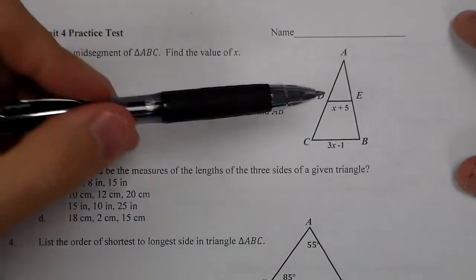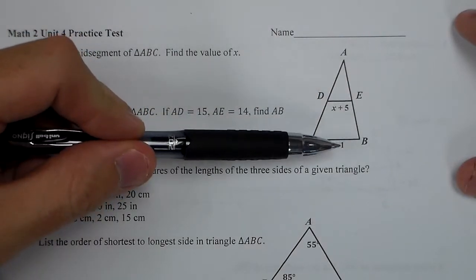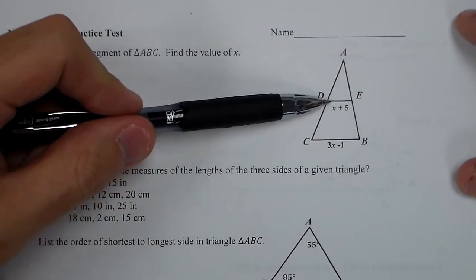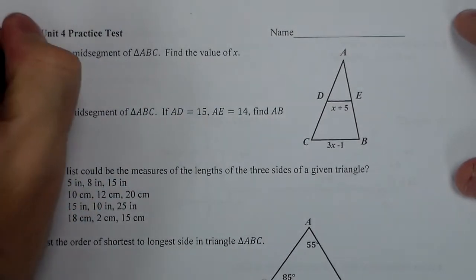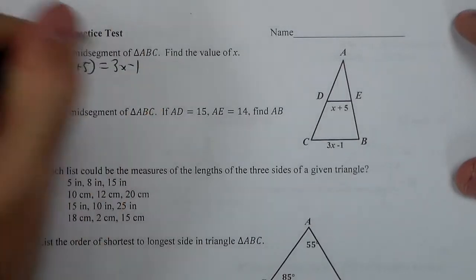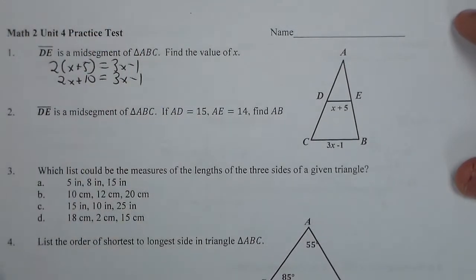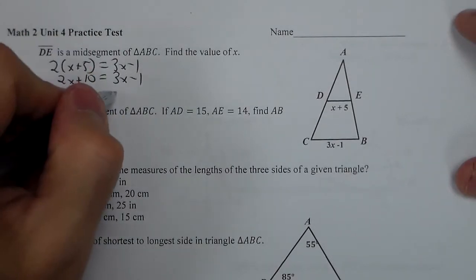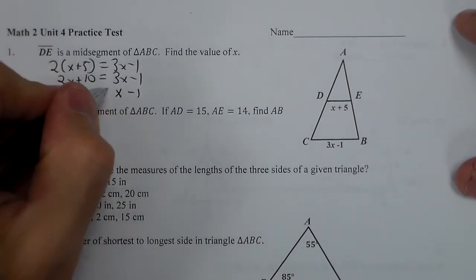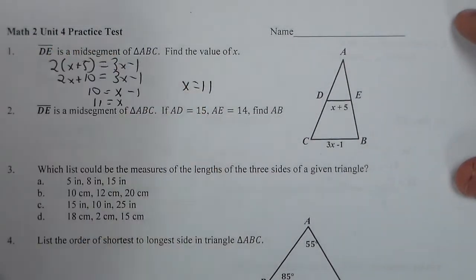What I'm not going to do is set them equal. DE, the midsegment, is half the length of the side or we double this midsegment to get it to match. So I'm going to do 2 times X plus 5 equals 3X minus 1. So that gives me 2X plus 10 equals 3X minus 1. Subtract 2X from both sides. And if I add over 1 I get 11. So my answer here is X equals 11.